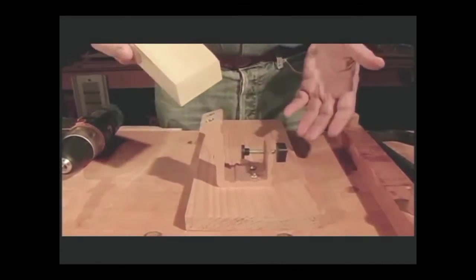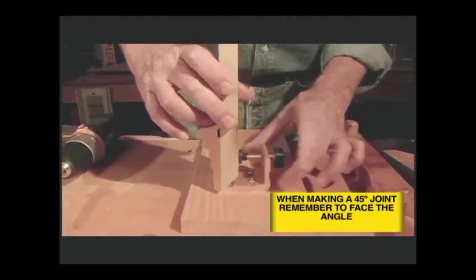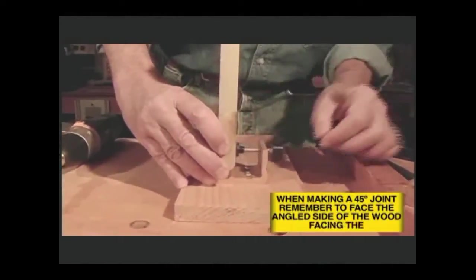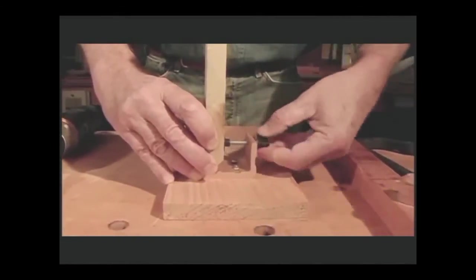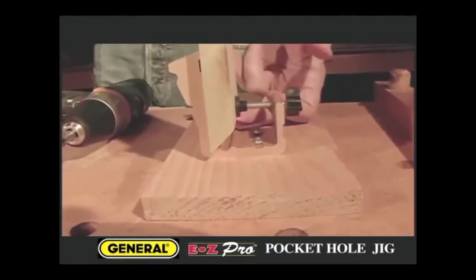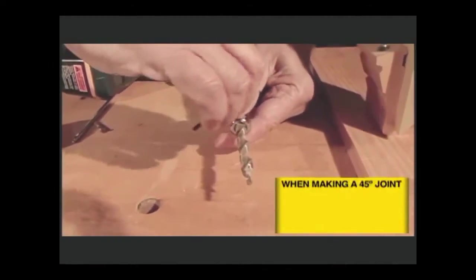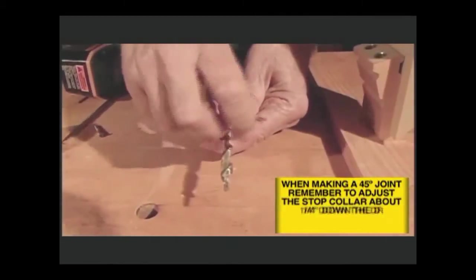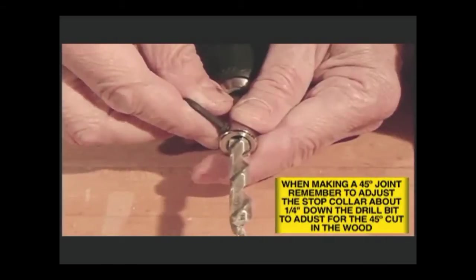When you're installing pocket hole screws in a 45 degree angle piece of wood, two things you want to remember. One, you want the face of the angle outward when you place it in the jig. The other thing you want to remember is because there's less wood here for the screw, you want to move the stop collar a little bit down the shaft, reducing the length of the cut. So that means that you want to bring it down about a quarter to three eighths of an inch.